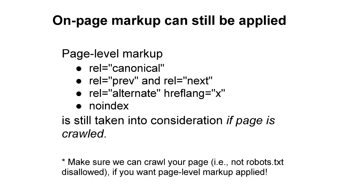Another background piece of information is that page-level markup is still taken into consideration in tandem with URL parameters. So if you have page-level markup like rel canonical, rel next/prev, or rel alternate hreflang, that's fine and can still be used by Google, even if you're using URL parameters. Just make sure that we can still crawl your page — meaning it's not robots.txt disallowed or set to not be crawled in URL parameters. As long as we can crawl your page, we can still use the page-level markup.